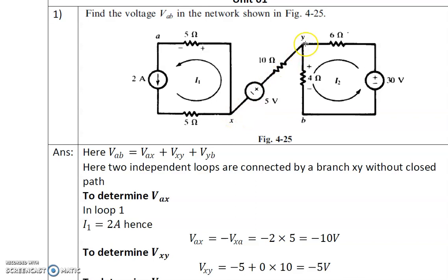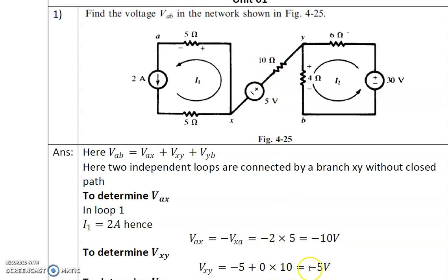For VXY, when traveling from X to Y, we first encounter the negative terminal of the voltage source, so we take this voltage as minus 5. Since no current flows through the 10 ohm resistance, 0 into 10 = 0, giving us minus 5 volts. The X point is negative with respect to the Y point.